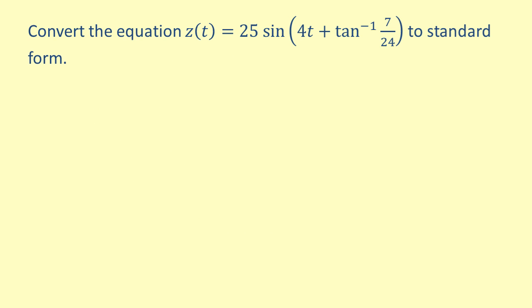Let's try another example, going the other way. We start with the function z of t equals 25 sine of 4t plus inverse tangent of 7 over 24. Recall that the tangent of phi equals c1 over c2, which is equal to the inverse tangent of 7 over 24. Therefore, c1 over c2 equals 7 over 24. It follows that c1 equals 7 twenty-fourths of c2. We can use this relationship to solve for c1 and c2.